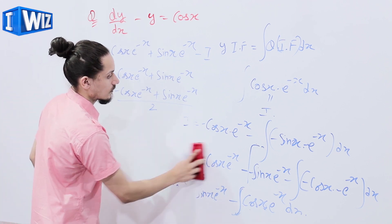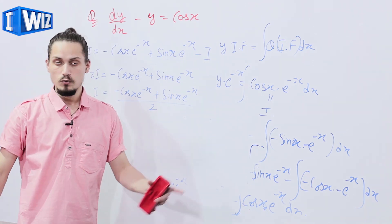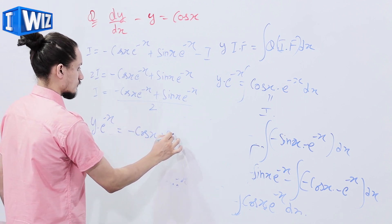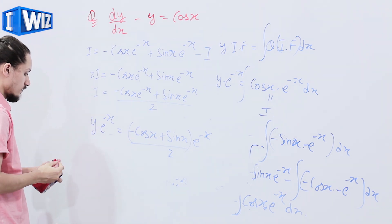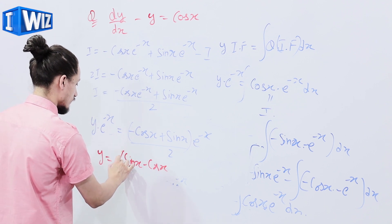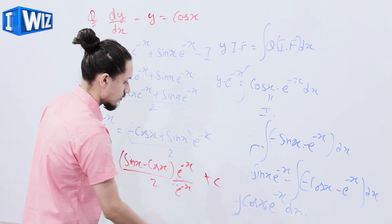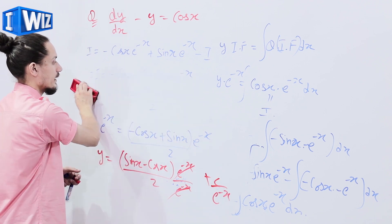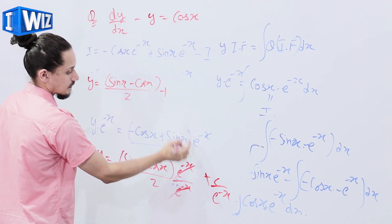We know that y·e^(-x) = I, so y·e^(-x) = (-cos(x) + sin(x))·e^(-x) / 2 + c. Dividing both sides by e^(-x), the exponential terms cancel, and the final result is y = (sin(x) - cos(x))/2 + c·e^x.